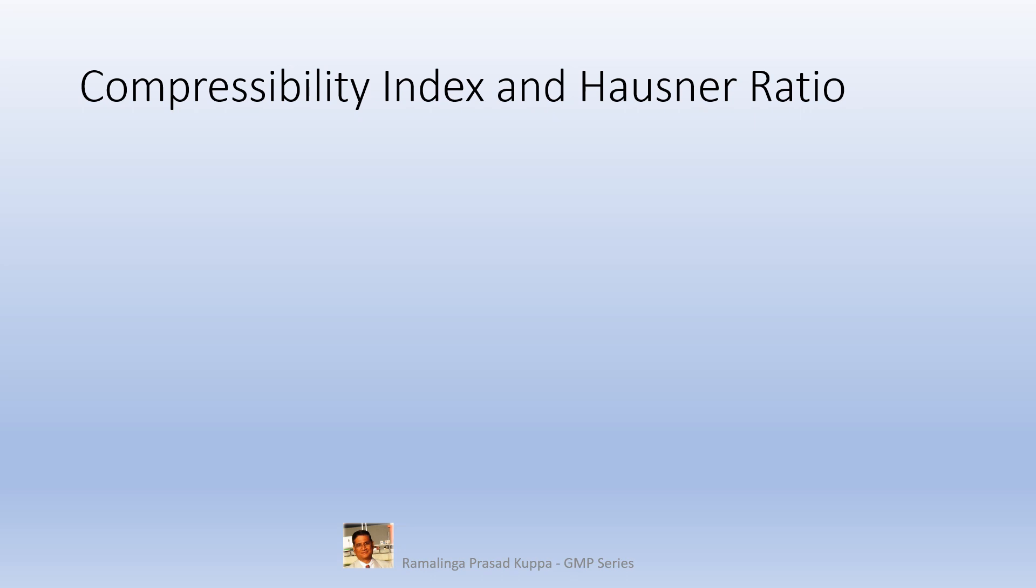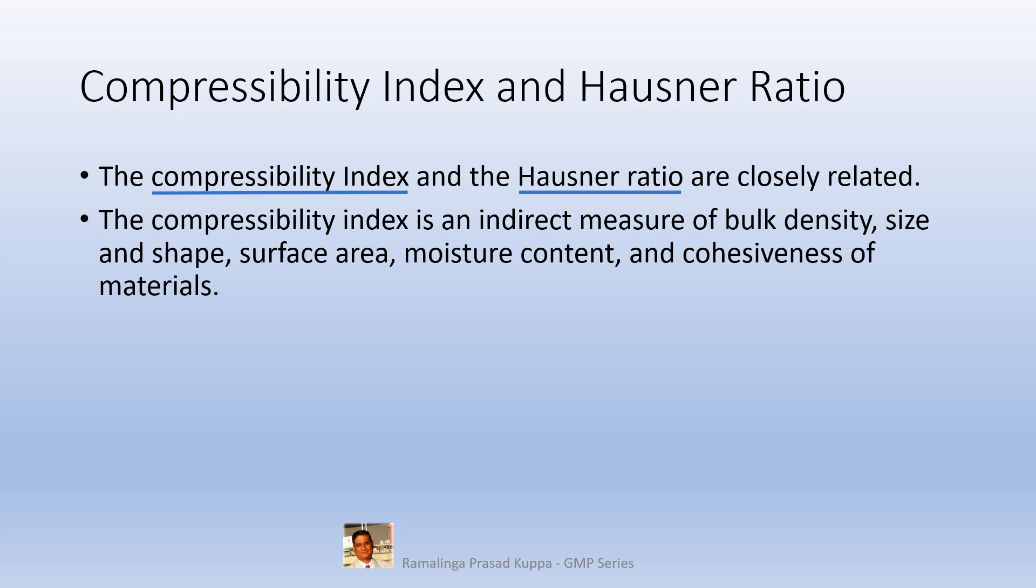The compressibility index and Hausner ratio. The compressibility index and the Hausner ratio are closely related. So let us see more. In fact, compressibility index and Hausner ratio are not separate tests. These are derived from the bulk volume or density of the powders. The compressibility index is an indirect measure of bulk density, size and shape, surface area, moisture content, and cohesiveness of the materials. These characteristics largely impact the disintegration pattern, dissolution pattern, size of the dosage form, etc. The development of dosage forms is done using all these factors.